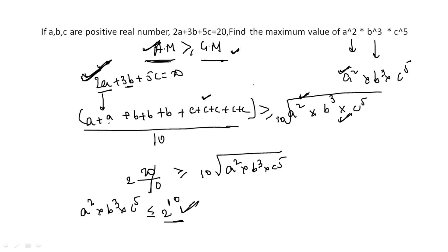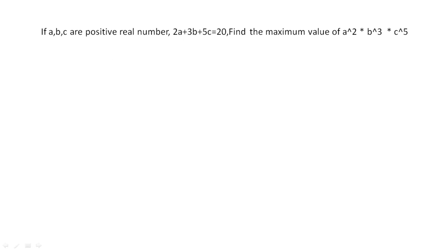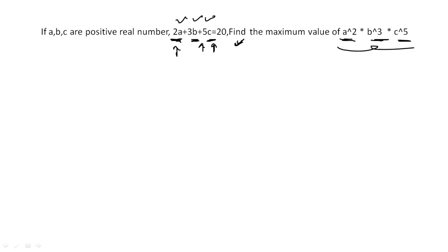Now let's see the shortcut — Method 2. For this kind of question, you split 2a + 3b + 5c = 20 by dividing the total in the ratio of the powers given. So you divide 20 in the ratio 2 : 3 : 5.